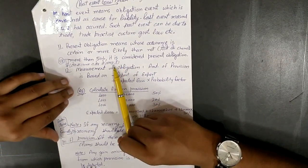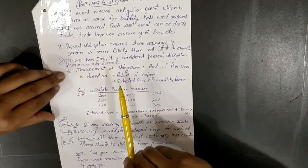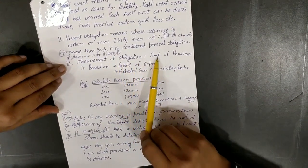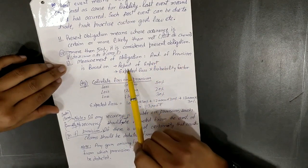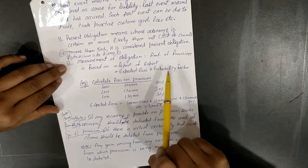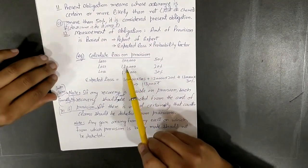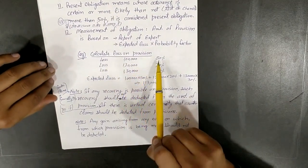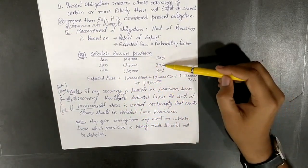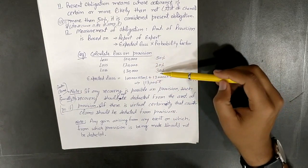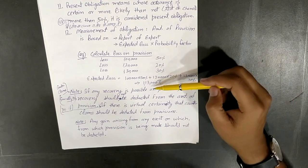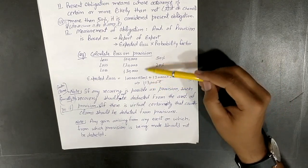Point number 12: Measurement of obligation. Amount of provision is based on report of expert or expected loss times probability factor. For example, loss 1 lakh, probability 50%, provision will be 50,000. Different probabilities are multiplied by the loss amounts and added together.